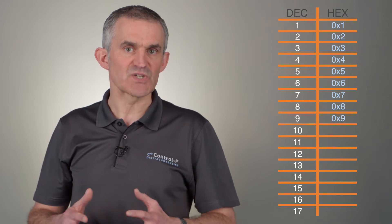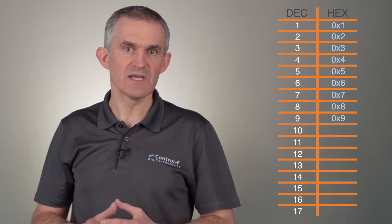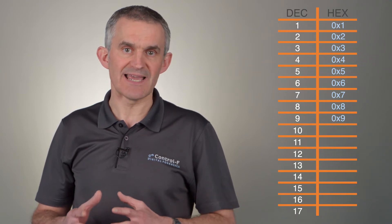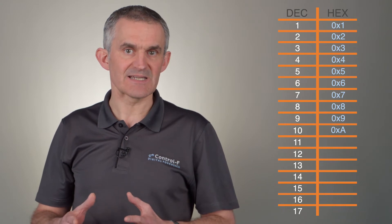At 9, things get more interesting as we've run out of decimal digits. To represent decimal 10 in hexadecimal, we use a single hex digit: A. A in hexadecimal represents decimal 10. B represents decimal 11, C is 12, D is 13, E is 14, and F is used to represent 15. At that point, we've used all 16 hexadecimal digits — 0 through F — and we're going to need a two-digit hexadecimal number.